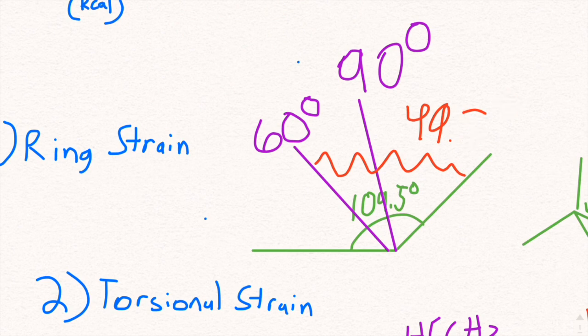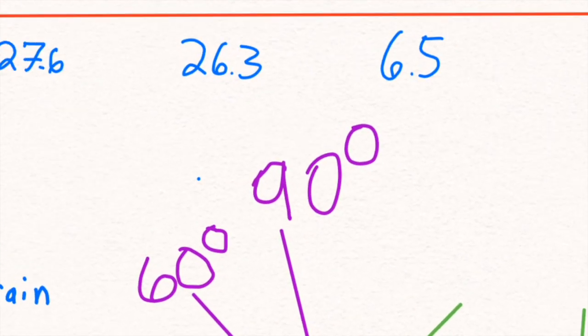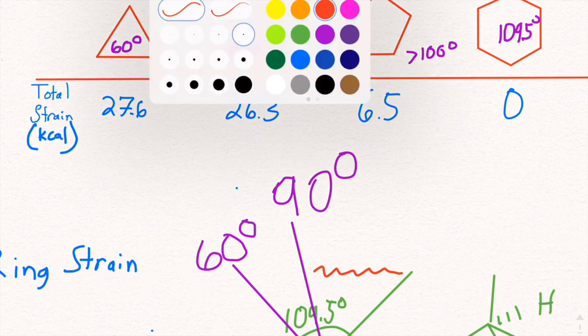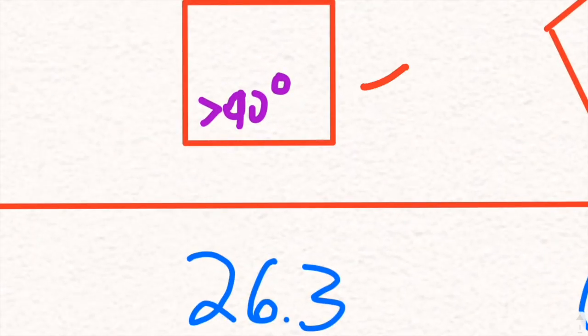When you move on to cyclobutane, it actually is much less because it only is at 90 degrees at worst case. This actually is slightly greater than 90 degrees because you're able to take advantage of slight bending in these bonds. It actually can use a little of its 3D structure, so it actually looks a little offset in 3D space.